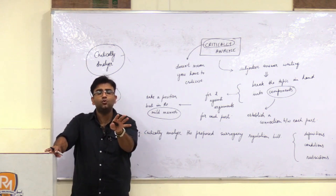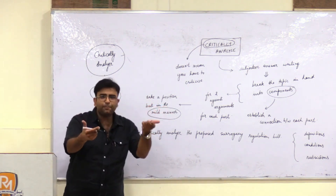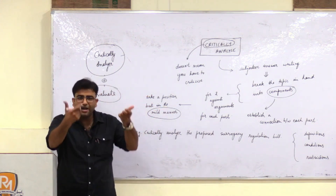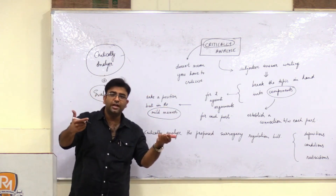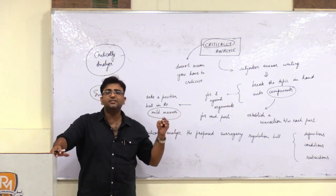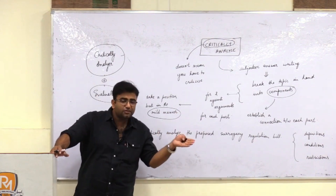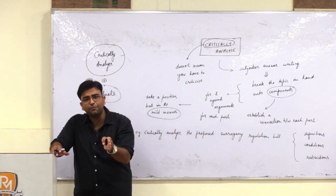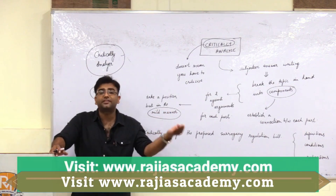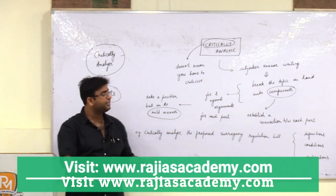You are showing both sides — there is a good and there is a bad. It may be possible that good may be slightly better than bad, or bad may be slightly more than good. In both cases, take a mild manner. Say that yes, since the positives are more than the negatives, the case stands. However, there are also negative consequences which need to be corrected. So you are taking a balanced approach while also taking a position.